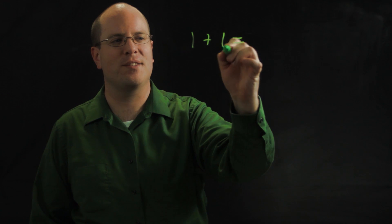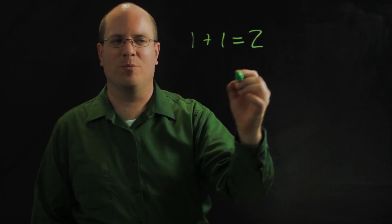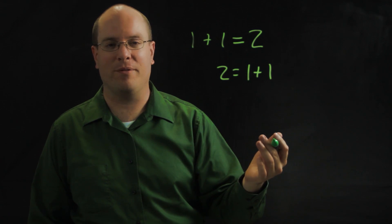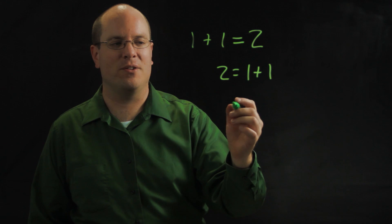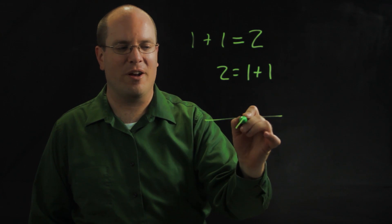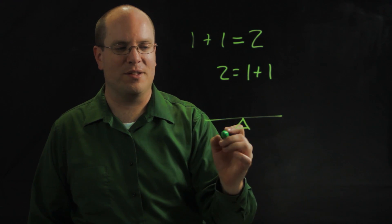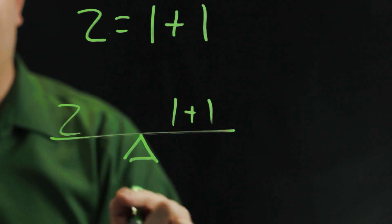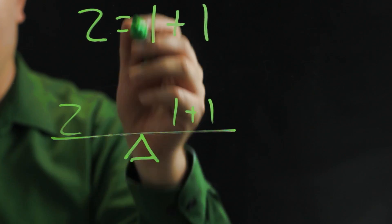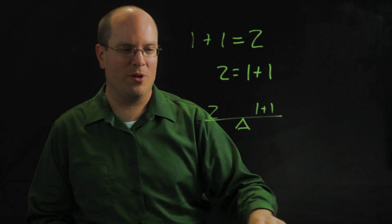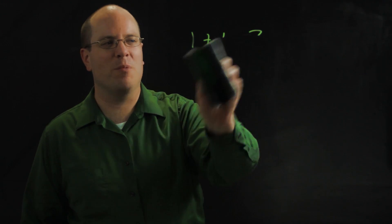They're used to seeing this, but if you put this in front of them, it'll throw them off. They have to understand that this is like a teeter-totter that's balanced. As long as both sides have the same amount, the equal sign can be in the middle. Once they get that, algebra will come a lot easier to them.